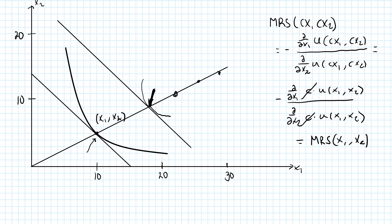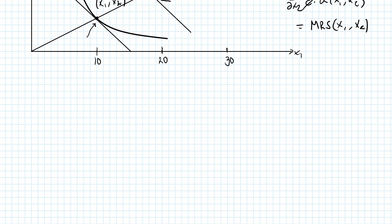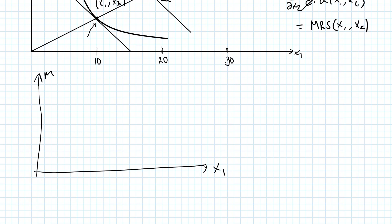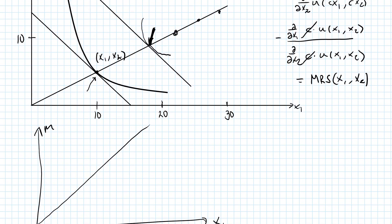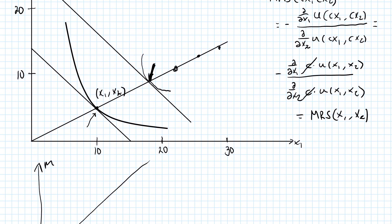Also, the Engel curve — where we draw income along one axis and the demand for one good along the other axis — must be a straight line through the origin as well. As you can see from the income offer curve, if you double income, for example, it must be the case that you double consumption of both good one and good two. And therefore, the Engel curve will be a straight line through the origin.